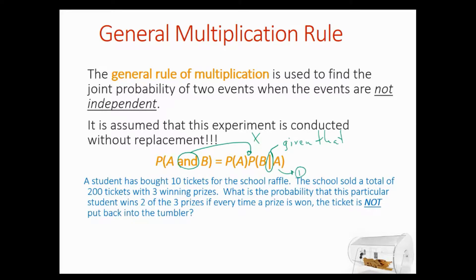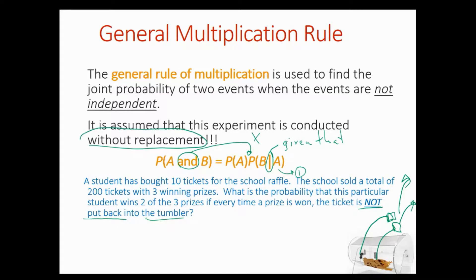Let's see the same information but changed slightly so that the two events are not independent. The student has bought ten tickets for the school raffle. The school sold a total of 200 tickets with three winning prizes. What is the probability that this particular student wins two of the three prizes if every time a prize is won the ticket is NOT put back into the tumbler? They take the ticket out, announce the name, and keep it out — they are not replacing the ticket back into the tumbler.